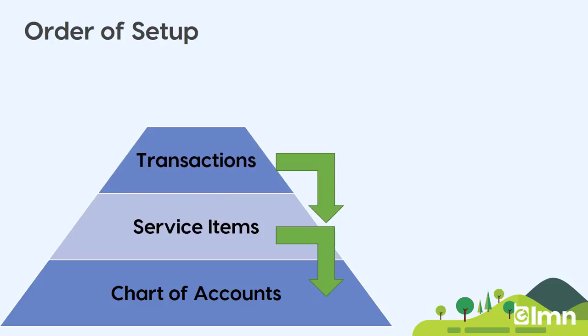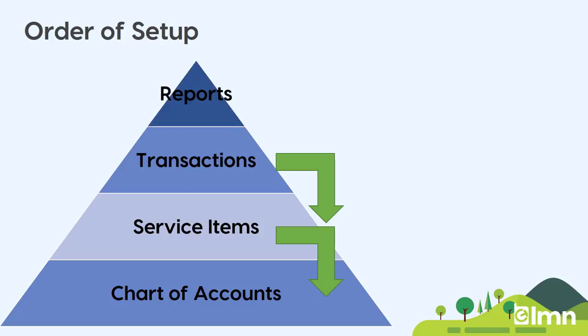Next up, you have transactions. Transactions reference chart of accounts, or they can reference service items. You might find it more valuable to have your transactions reference service items so you can get more detailed reporting. When you sell on customer invoices, or when you book vendor invoices, subcontractor invoices, or even timesheets, those things can link to service items, allowing reporting at a more detailed level. And if you use QuickBooks job costing, many of the reports are driven by service items, which is why we recommend setting those up.